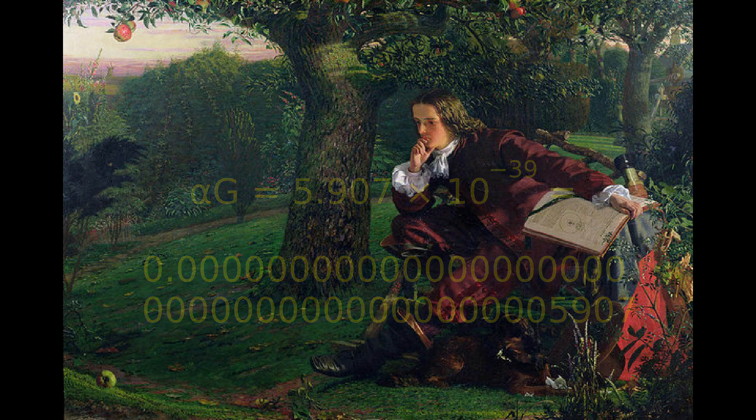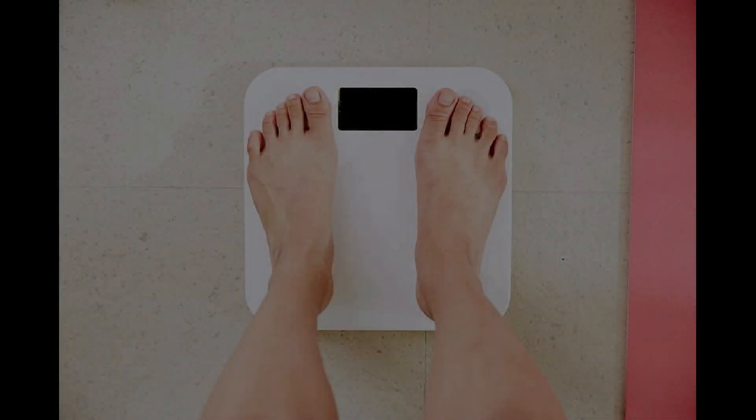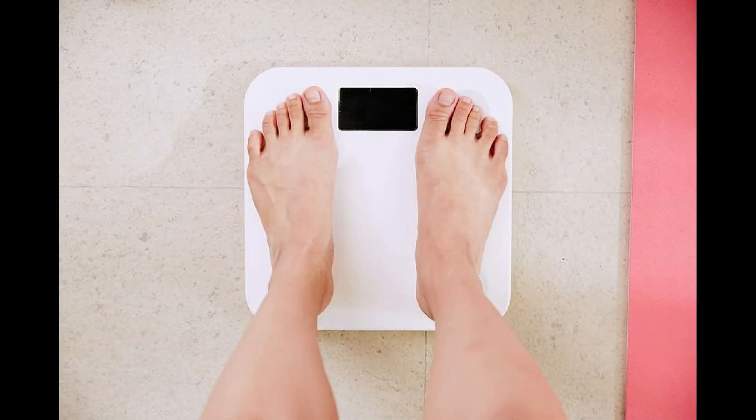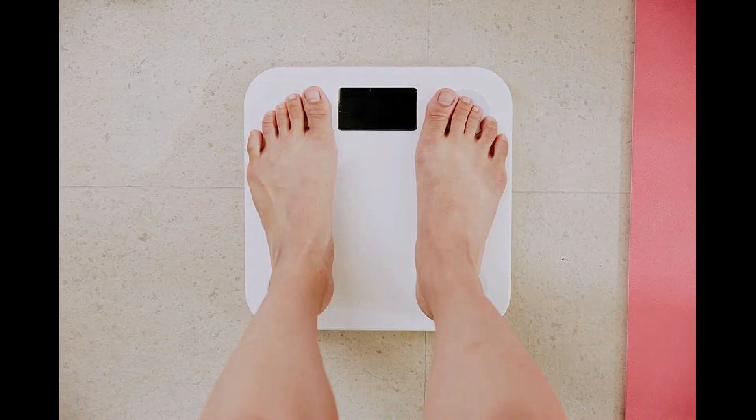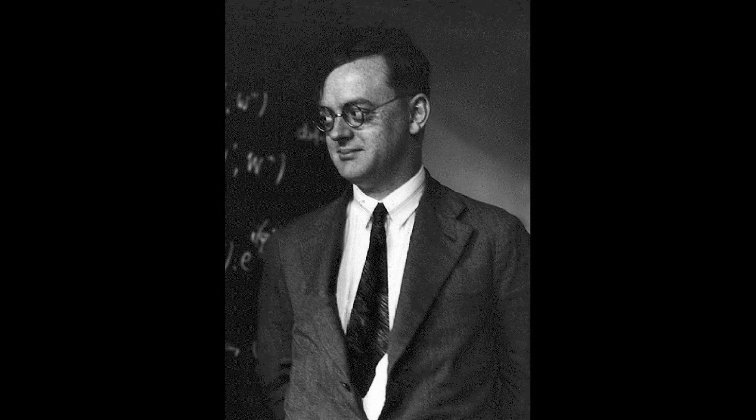If alpha sub g were larger, you and everything else in the universe would weigh more. Conversely, if alpha sub g were smaller, everything would weigh less. But if gravity weren't so weak, we wouldn't be here. In 1947, the physicist Pascual Jordan noticed a strange coincidence. He described it in his book The Origin of the Stars.